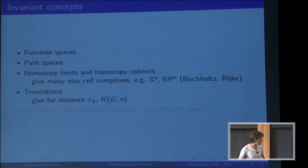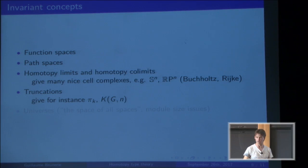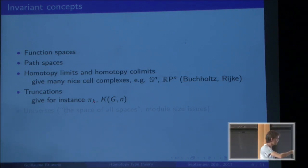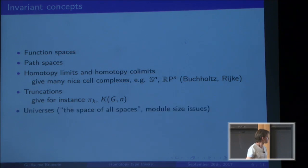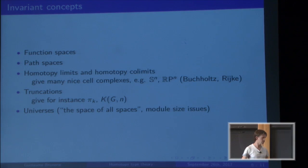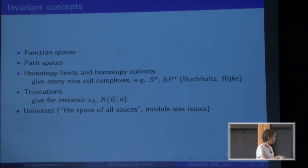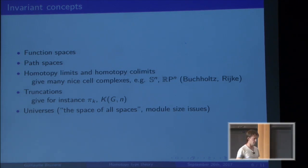There is something called truncations, which corresponds to killing all homotopy above some level. This is used, for instance, to define homotopy groups or to define Eilenberg-MacLane spaces. Finally, there are universes — intuitively, the space of all spaces — which is very useful in this theory.